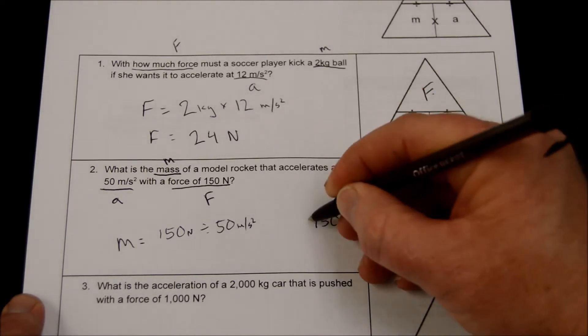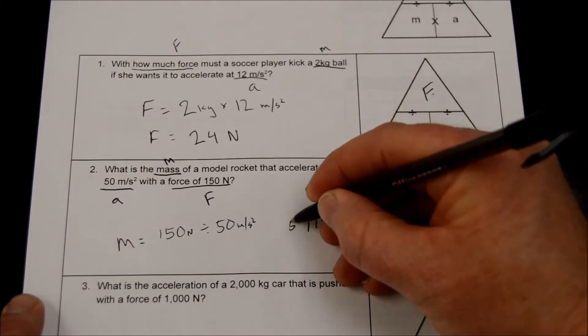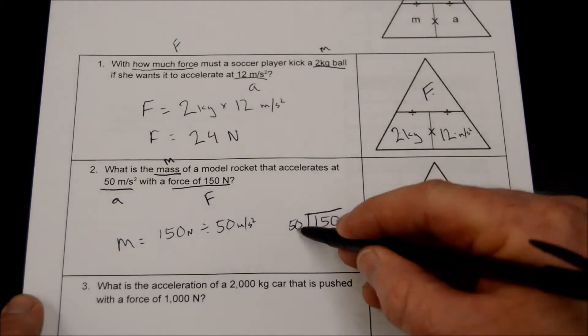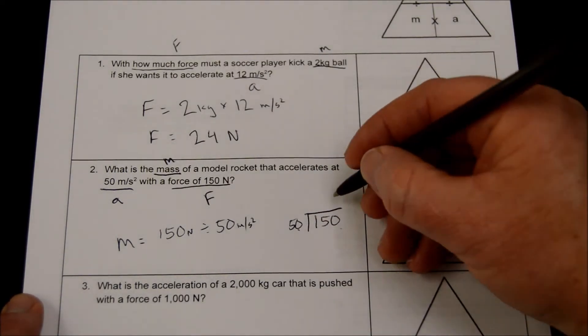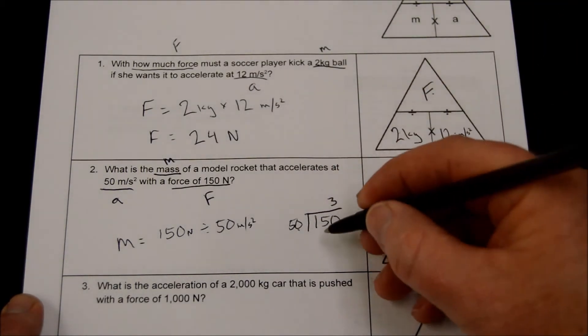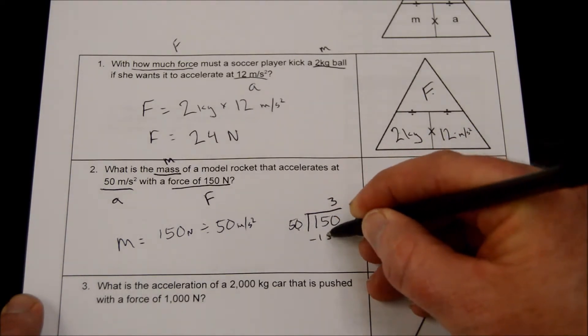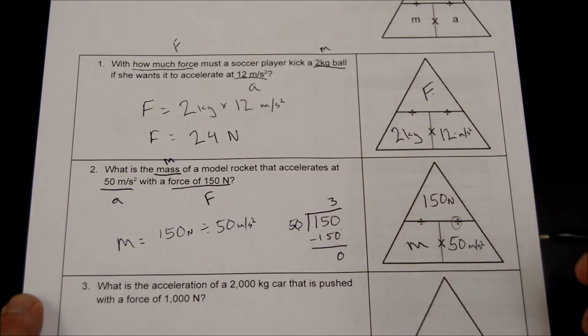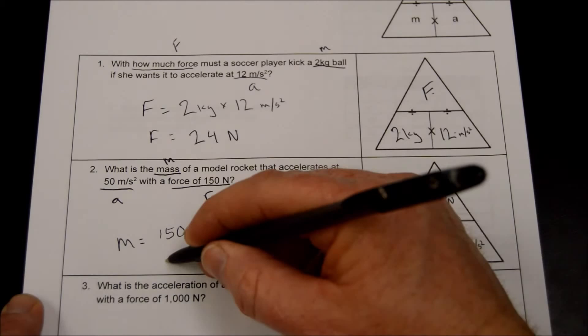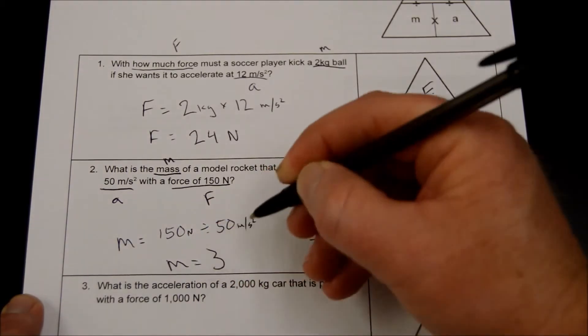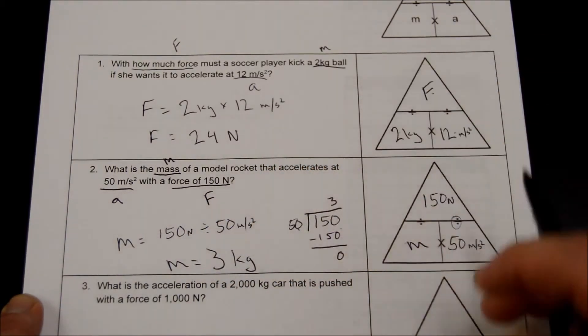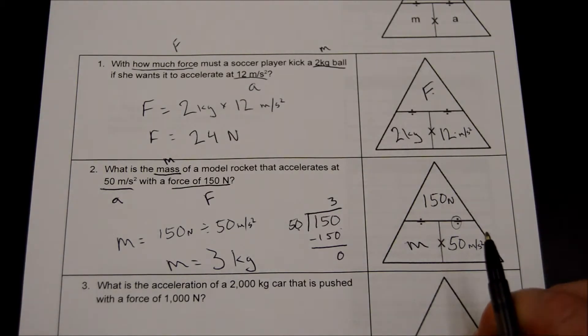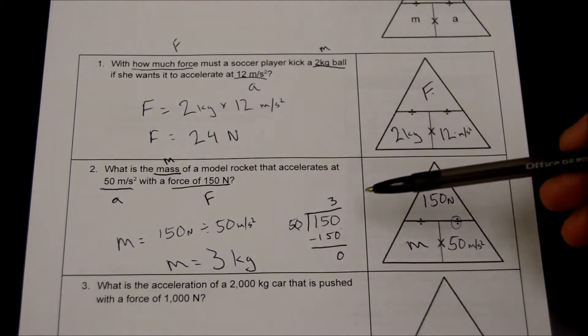So the mass is going to be equal to 150 newtons divided by 50 meters per second squared. So we have 150 divided by 50. How many times will 50 go into 150? 3 times. 3 times 50 is 150, so you have nothing left over. So our mass is equal to 3 kilograms. Every time when you're using mass in this formula, it's always kilograms.